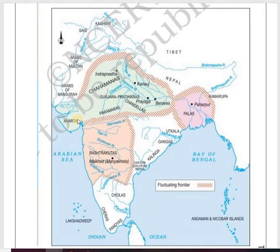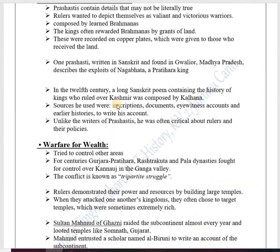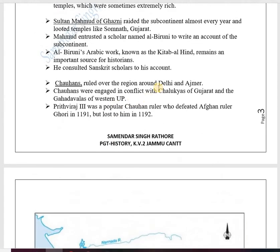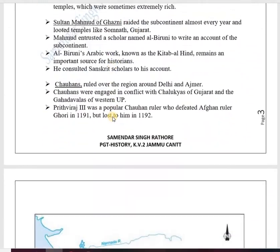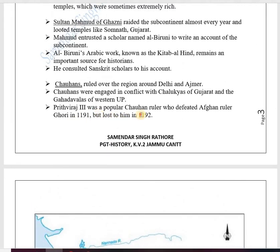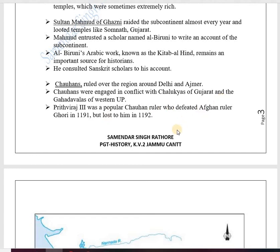The Chahamanas were victorious in conflicts among these dynasties after the Tripartite Struggle. Prithviraj III was a popular Chahamana ruler who defeated the Afghan ruler Muhammad Ghori in 1191 at the First Battle of Tarain. However, he lost to Ghori in 1192 at the Second Battle of Tarain, after which Muhammad Ghori became dominant.